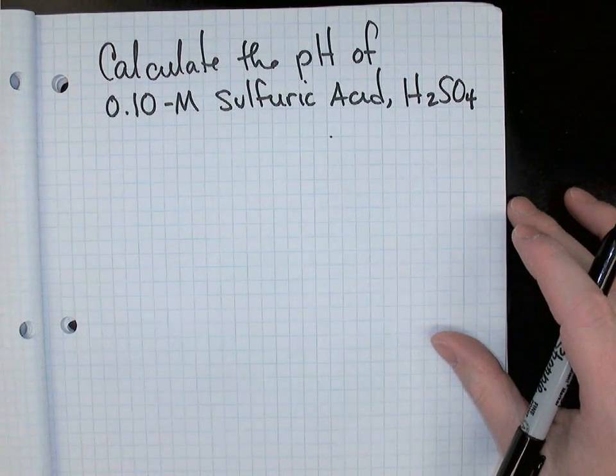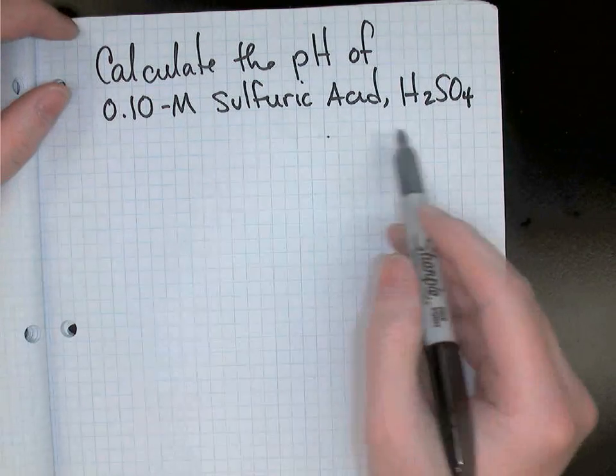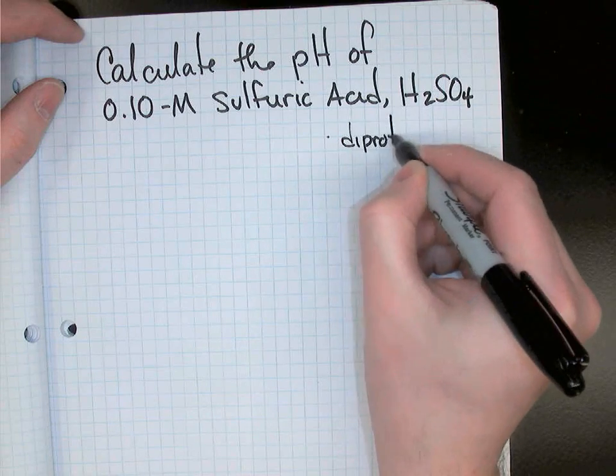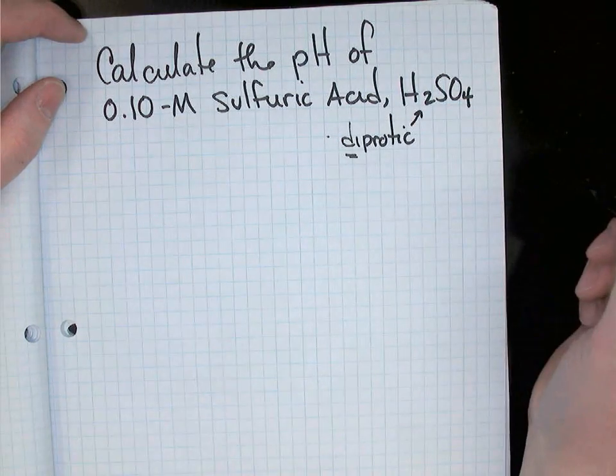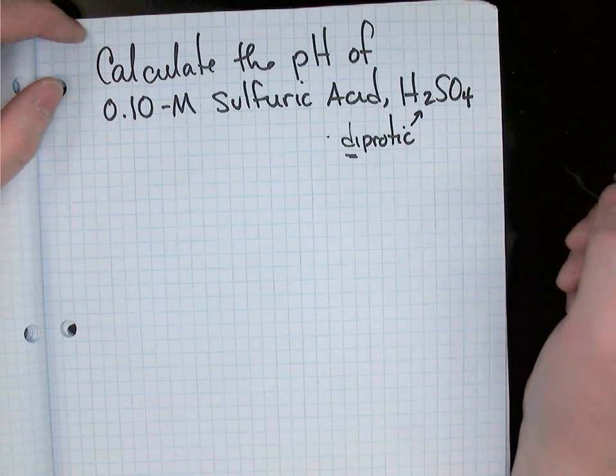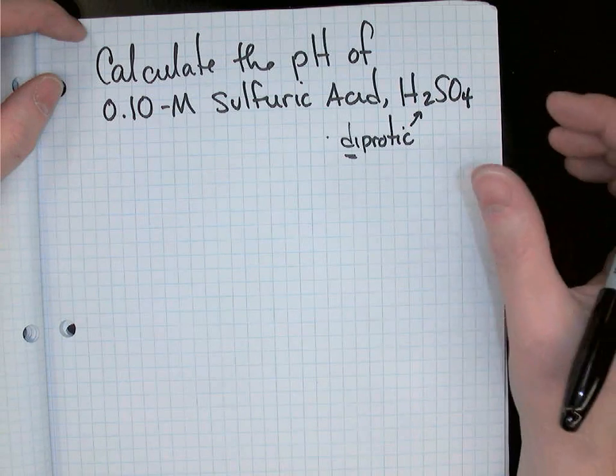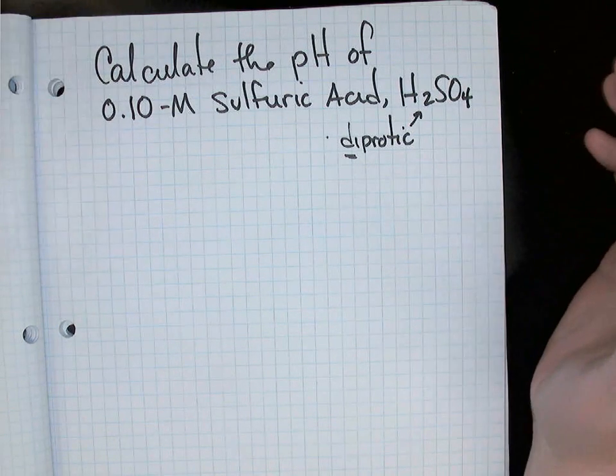In this video, we're going to take a look at how to find the pH of a diprotic acid, sulfuric acid. It's said to be diprotic because di means two - it has two hydrogen ions to donate, H2SO4. So we're going to have to do two ice tables, two balanced equations, and we'll do two steps then.